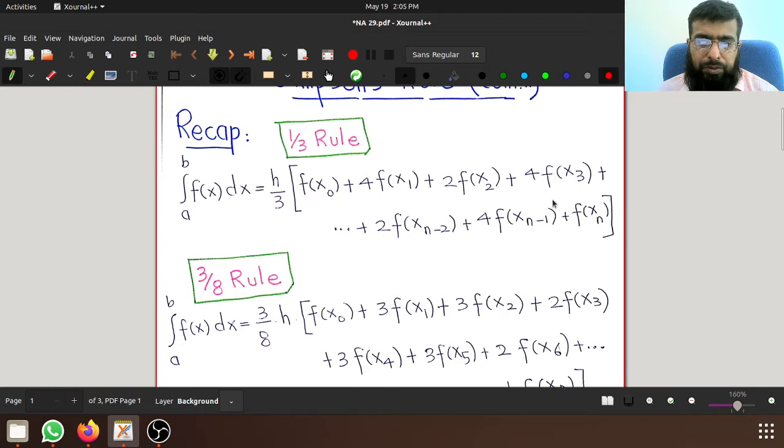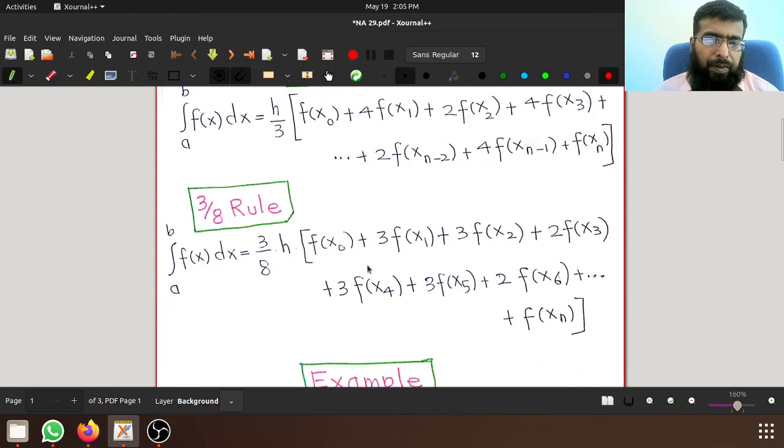The even terms f of x2, f of x4, f of x6 are multiplied by 2. And this is the formula for the 3/8 rule. The formula is that we have h multiplied by 3/8 fraction. The first and the last terms are multiplied by 1.